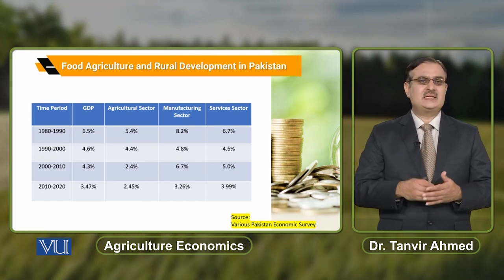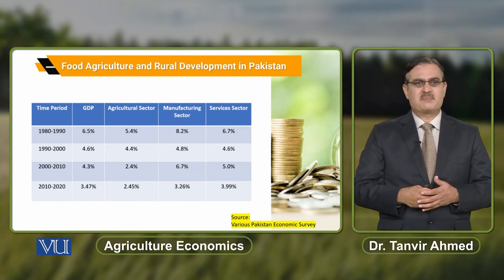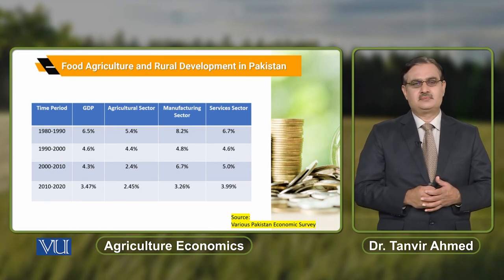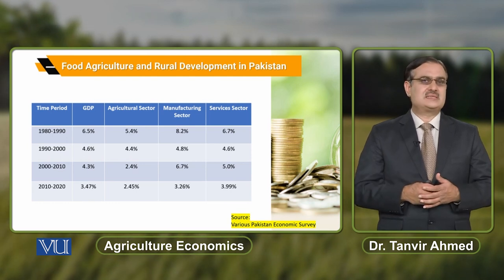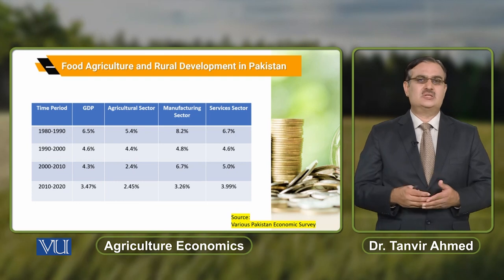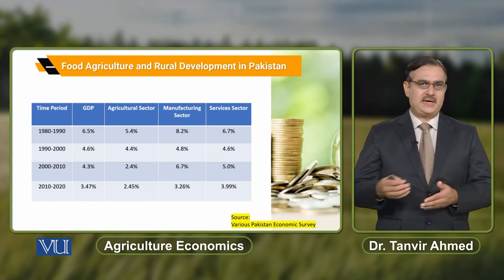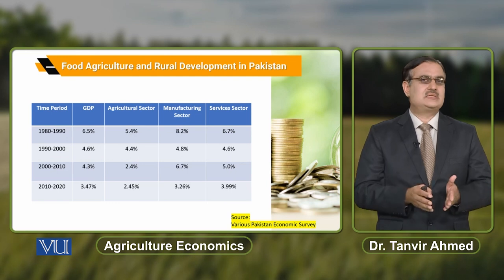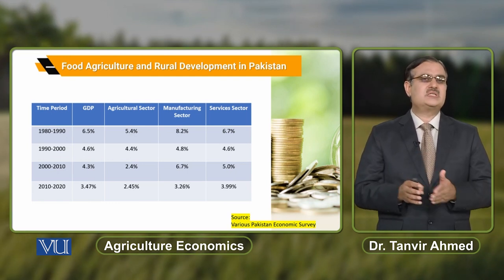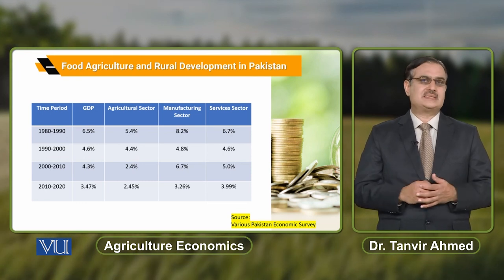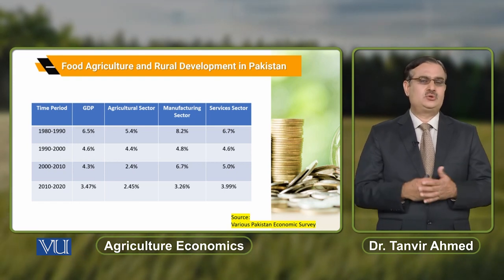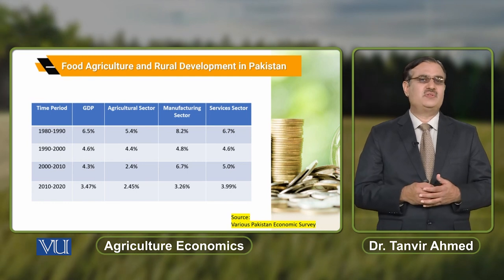اگر ہم اس growth rate کو over the last four decades دیکھیں، تو ہم کہہ سکتے ہیں there is a consistent decline in the growth of the agricultural sector. یہ consistent decline in the growth of the agricultural sector has implications on rural development and the agricultural sector of Pakistan. اگر agricultural sector better perform نہیں کرے گا، properly grow نہیں کرے گا، تو اس کے implications آئیں گے on the development of Pakistan. Policy makers اور teaching and research institutes کو یہ دیکھنا ہوگا why there is this decline in the growth of the agricultural sector.